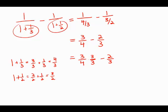Similarly, two-thirds, I'm going to multiply this by four over four. And so what happens is I get nine over twelve minus eight over twelve equals one over twelve.